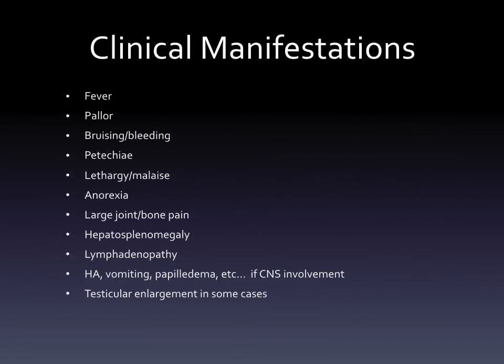Clinical manifestations for the child with leukemia may include fever, episodes of bruising or bleeding, petechiae, lethargy, malaise, loss of appetite, anorexia, large joint and bone pain - which makes sense given what's happening in the bone marrow - and hepatosplenomegaly, lymphadenopathy. They may present with headache, vomiting, and papilledema if CNS involvement is occurring. In some cases, boys may present with testicular enlargement.